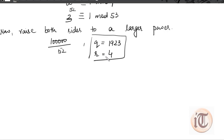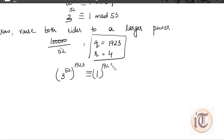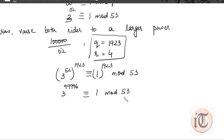This is the quotient 1923 and remainder 4. We raise both sides to the power 1923: so 3 to the power 52, raised to 1923, is congruent to 1 to the power 1923 mod 53. Multiplying 52 by 1923 gives 3 to the power 99,996. Since 1 to the power 1923 remains 1 mod 53, dividing 3^99,996 by 53 gives remainder 1. But we still need to account for the remaining power of 4.